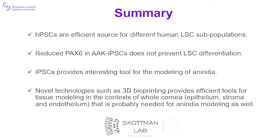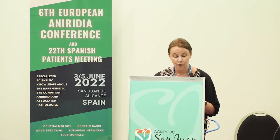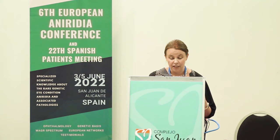As a summary, I hope I was able to show that human pluripotent stem cells are really efficient to get different types of limbal stem cell subpopulations. We need to learn to understand much better what they actually are. It seems, at least with the cell lines we have in our hands, that the reduced PAX6 level doesn't really cause issues in limbal stem cell commitment in vitro under healthy normal conditions. We consider that this cell model is really interesting for future aniridia modeling work. Novel technologies like 3D bioprinting may provide a more efficient tool for tissue modeling of the whole corneal context, implementing epithelial stroma, maybe even endothelium and innervation, giving us better understanding of aniridia.